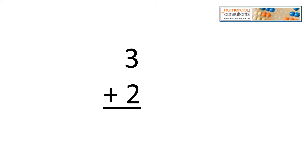Let's take a look at this one. This is a very easy problem, and this isn't even really a problem you would use the double strategy for — it's just a problem where everybody will know the doubles for it. We have three plus two. We know we can count on by ones and it's five, but we're going to take a look using the double strategy.